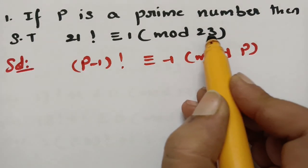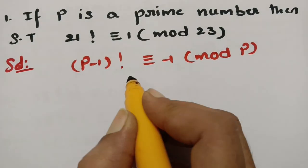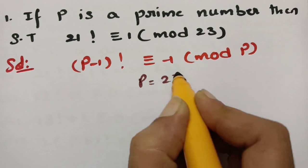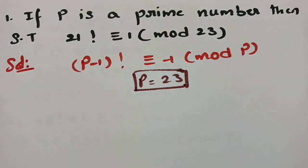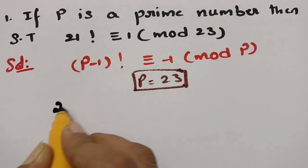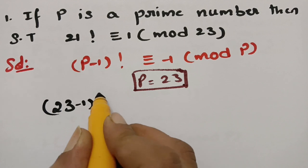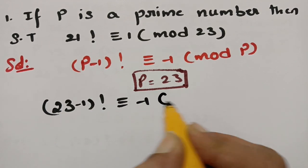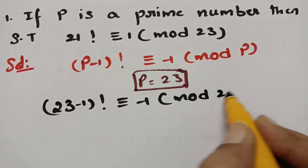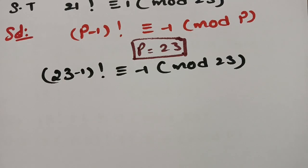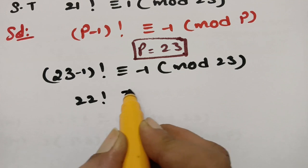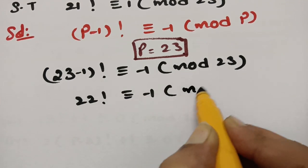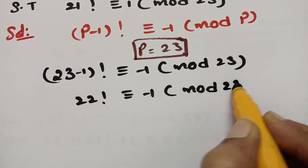Here in place of P, we substitute P = 23, since 23 is a prime number. Substituting P = 23 into Wilson's theorem gives (23−1)! ≡ −1 (mod 23), which is 22! ≡ −1 (mod 23).